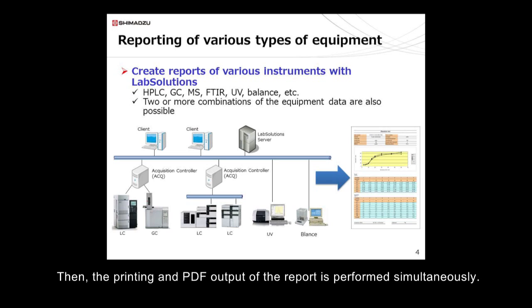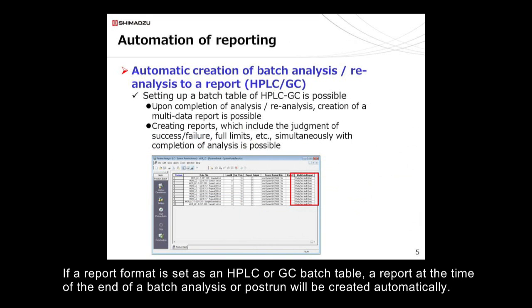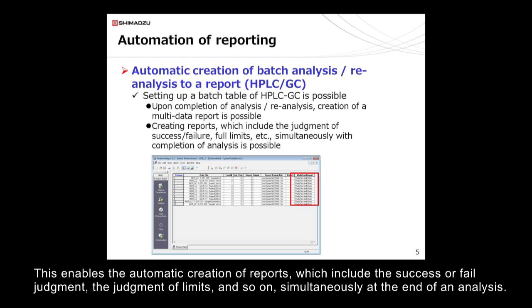The printing and PDF output of the report is performed simultaneously. If a report format is set as an HPLC or GC batch table, a report at the time of the end of a batch analysis or post-run will be created automatically. This enables the automatic creation of reports which include the success or fail judgment and the judgment of limits simultaneously at the end of an analysis.